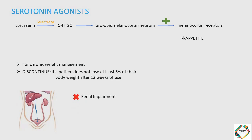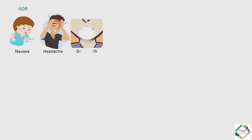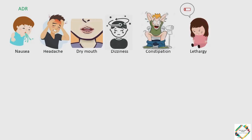There are certain older serotonin agonists that were used for weight loss which have been pulled from the market following an increase in potentially fatal adverse effects, including valvular heart disease. It is believed that valvulopathy, which may lead to pulmonary hypertension, is linked to 5HT2B receptors. The most common adverse effects associated with Lorcaserin include nausea, headache, dry mouth, dizziness, constipation, and lethargy. Very rarely we can observe mood changes and suicidal ideation.